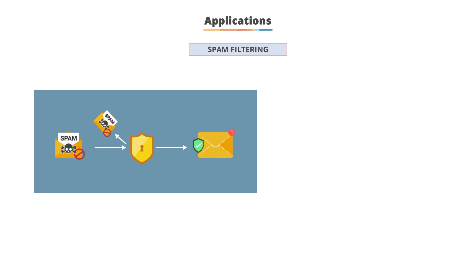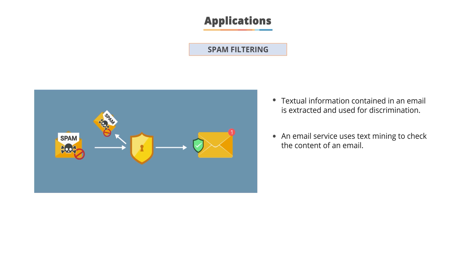Spam filtering: spam detection is an important method in which textual information contained in an email is extracted and used for discrimination. Text mining is useful in automatic detection of spam emails based on filtering content. An email service provider such as Gmail or Yahoo Mail checks the content of an email, and if malicious text is found, that email is marked as spam and sent to the spam folder.